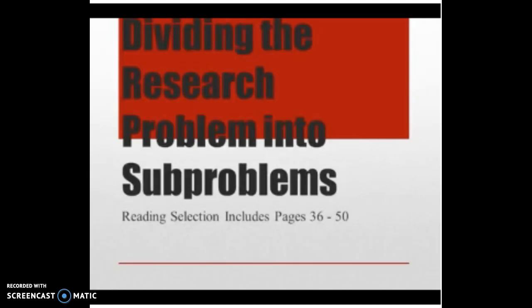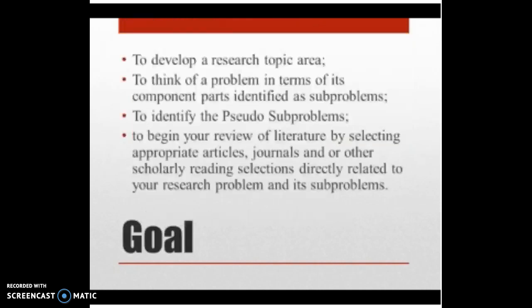LAKM 603 Graduate Research and Writing. Dividing the Research Problem into Sub-Problems. For a better understanding of the subject matter, read pages 36-50 of your course text. The goals for this particular subject involve you fully developing a research topic, thinking of a problem in terms of its component parts identified as sub-problems, identifying the pseudo-sub-problems, and beginning your review of literature by selecting appropriate articles, journals, and other scholarly reading selections directly related to your research problem and its sub-problems.